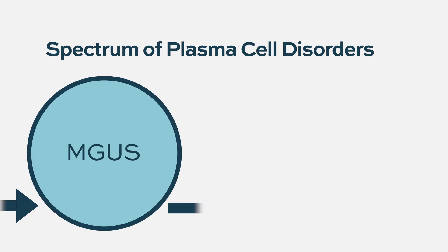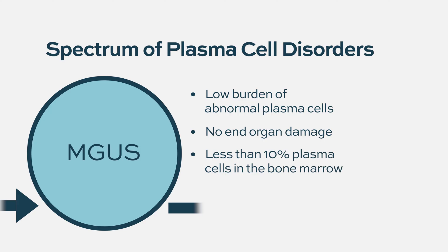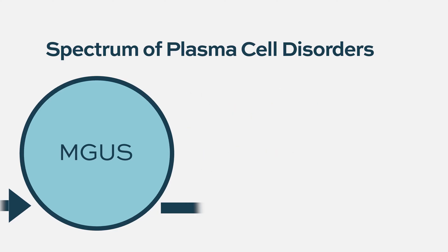On the other end of the spectrum is MGUS, where there is a low burden of plasma cell disease and no organ damage attributable to the plasma cell disorder. Those patients have less than 10% plasma cells in their bone marrow, a low burden of circulating protein in their blood or urine, and clinically they are fine.